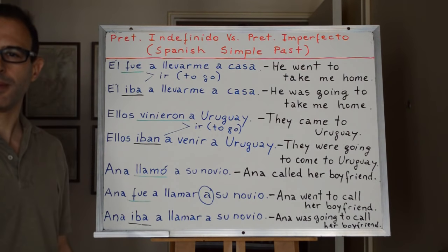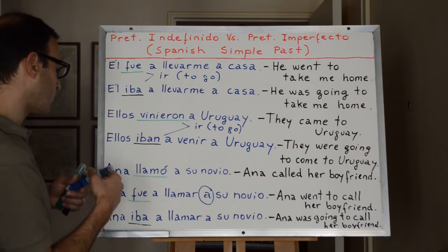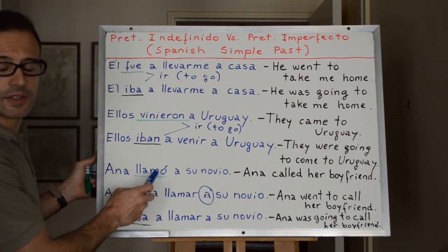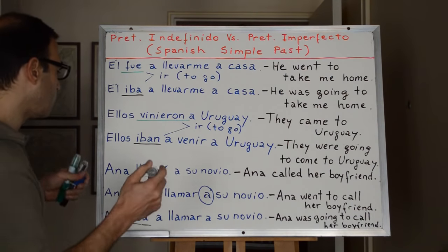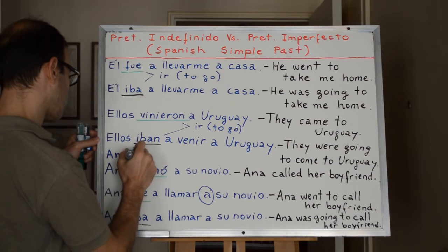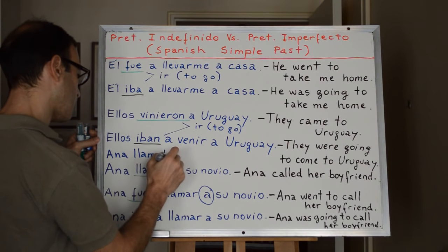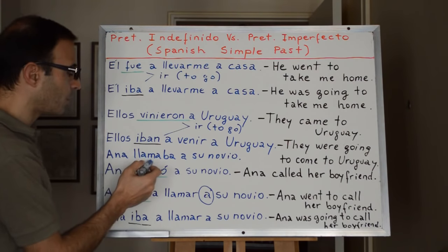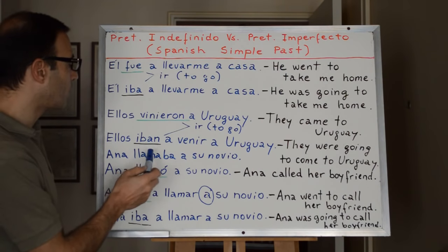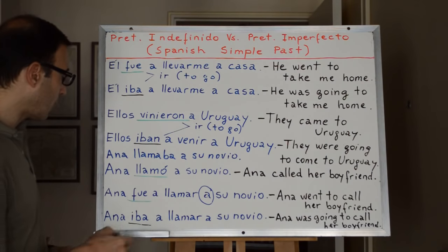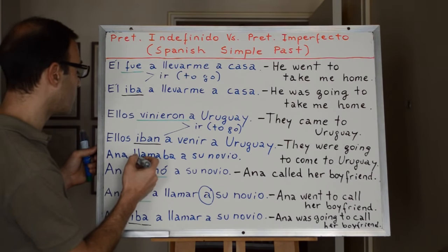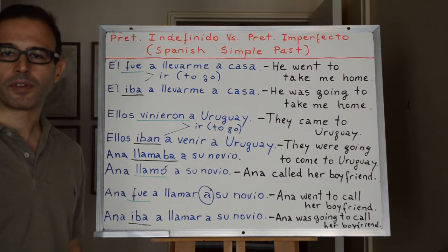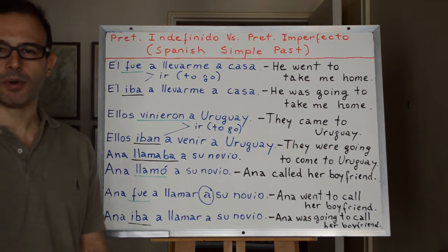Ana went to call her boyfriend — that's a fact. Now look at this one also. Ana llamó a su novio — let's change the verb llamar, which is here in pretérito indefinido, and switch it to pretérito imperfecto. Ana llamaba a su novio. So the verb llamar, meaning to phone or to call, is now conjugated in pretérito imperfecto for Ana, for the third person singular. Ana llamaba a su novio can be translated as Ana was calling or was phoning her boyfriend.